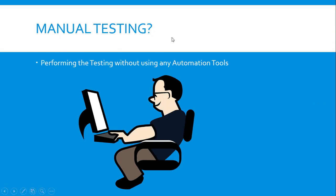Manual testing is nothing but a person directly sitting before the computer and manually checking whether the application functionality is working as expected or not. Here we don't use any tools — directly the person will be testing the application.